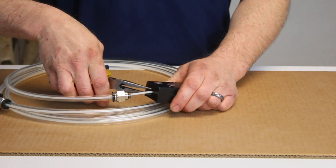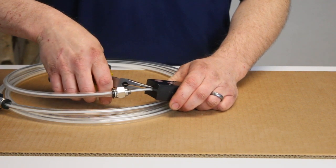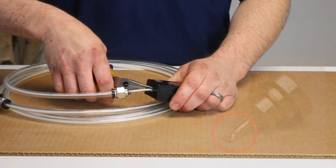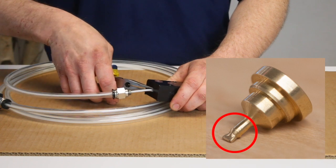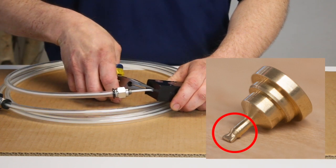Also avoid grabbing onto the barb with your needle nose pliers. It's very easy to pinch off the outlet check valve housing completely and you will not get any fluid out of the pump.